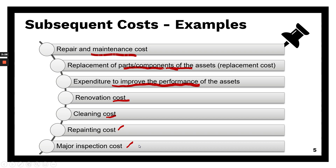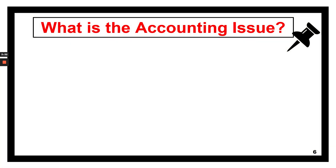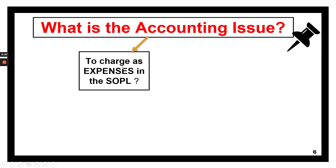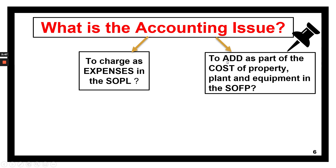The accounting issue with regard to subsequent costs is: shall the reporting entity charge that as an expense and show it in the Statement of Profit or Loss, or shall it be included as part of the cost of the PPE? For example, if the cost before was $100,000 and you incurred subsequent costs of $10,000, shall that $10,000 be added to the PPE cost, or should it just be expensed in the year incurred?